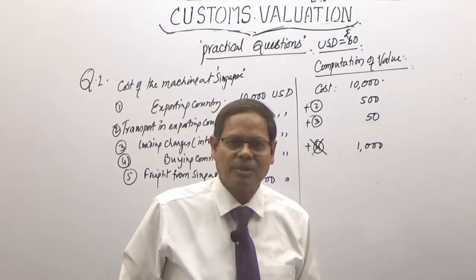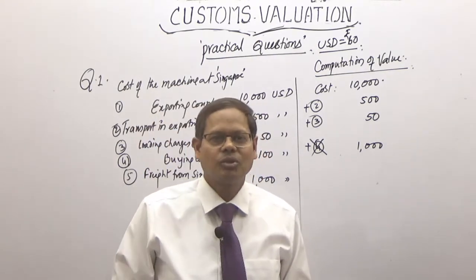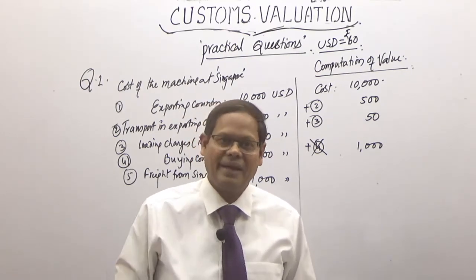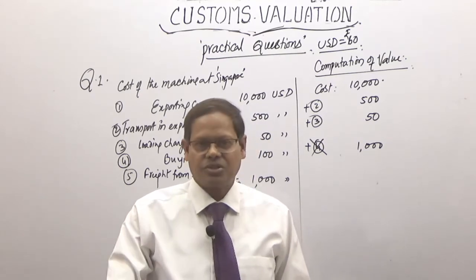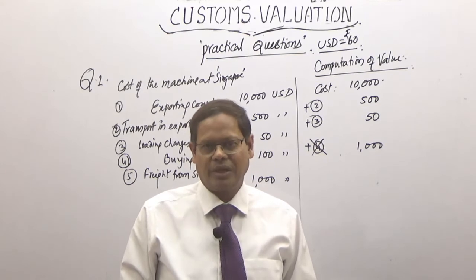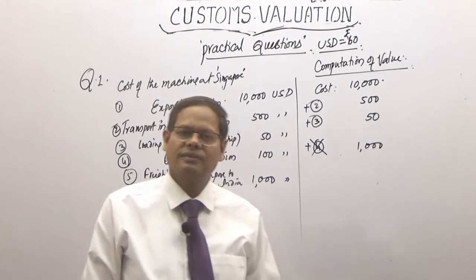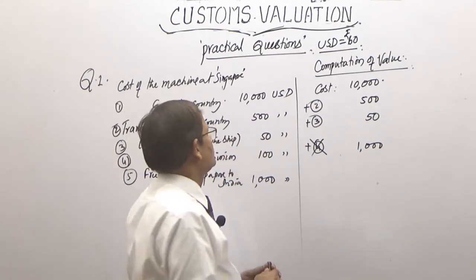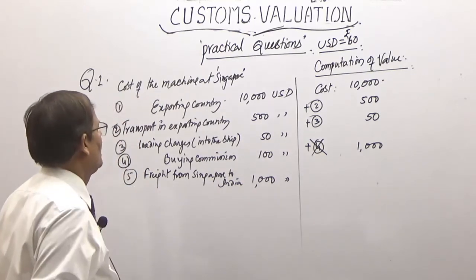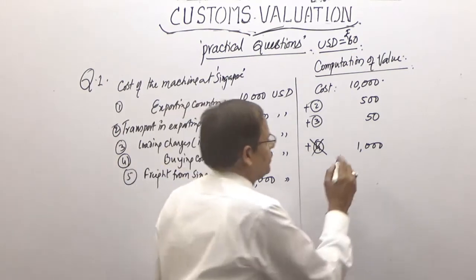The next question is: where is insurance? Insurance is necessary to bring goods from Singapore to India. It is not given in the problem, but we must add it. If details are not available, simply use 1.125% of FOB. First, find out the FOB value.